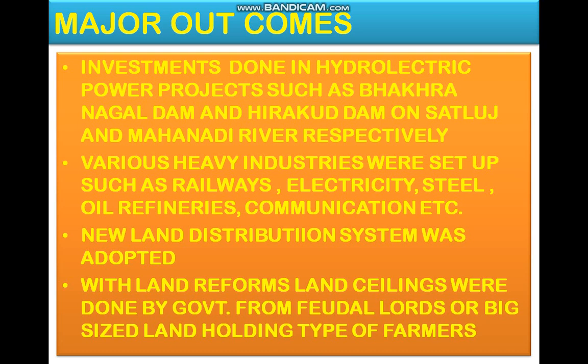As I have told you earlier, huge investments were done in hydroelectric power projects such as the Bhakra-Nangal Dam and Hirakud Dam on the Sutlej and Mahanadi Rivers respectively. These were outcomes from both the first and second five-year plans. Various heavy industries were also set up, such as railways, electricity, steel, oil refineries, and communication.